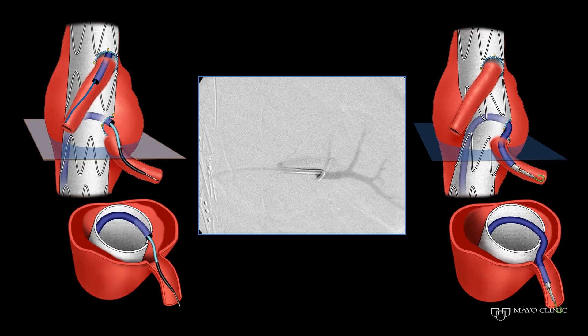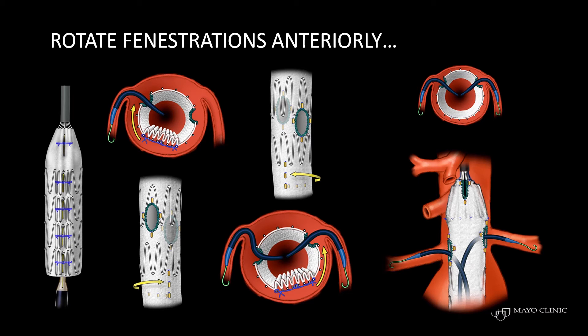The diameter-reducing tie automatically brings the fenestration slightly more posterior. So one of the maneuvers you can perform — and you should do this with caution and moderation — is to rotate the stent graft anteriorly, first securing one of the fenestrations and then repeating in the opposite direction for the fenestration of the other renal artery.